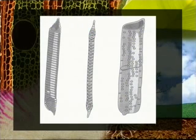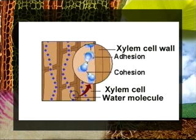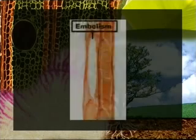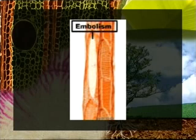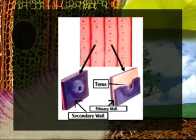Transpirational pull requires vessels to be very small in diameter, otherwise cavitation would break the water column. As water evaporates from leaves, more is drawn up through the plant to replace it. When xylem water pressure reaches extreme levels due to low water input — for example in dry soil — gases come out of solution and form a bubble, creating an embolism that can spread to adjacent cells unless bordered pits are present, which have a plug-like torus structure that seals off the opening and stops embolism spread.